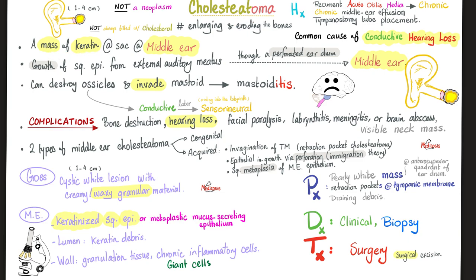What is cholesteatoma? It is a mass of keratin — cystic, located in the middle ear. Why does it happen? No one knows for certain. Some hypotheses: growth of squamous epithelium from the external ear through a perforated eardrum into the middle ear; or squamous metaplasia of the middle ear epithelium, since normally the middle ear has low cuboidal epithelium — when that changes to squamous, we get keratin in the middle ear. Others argue it is caused by otitis media. Associations are not causes; correlations are not causations.